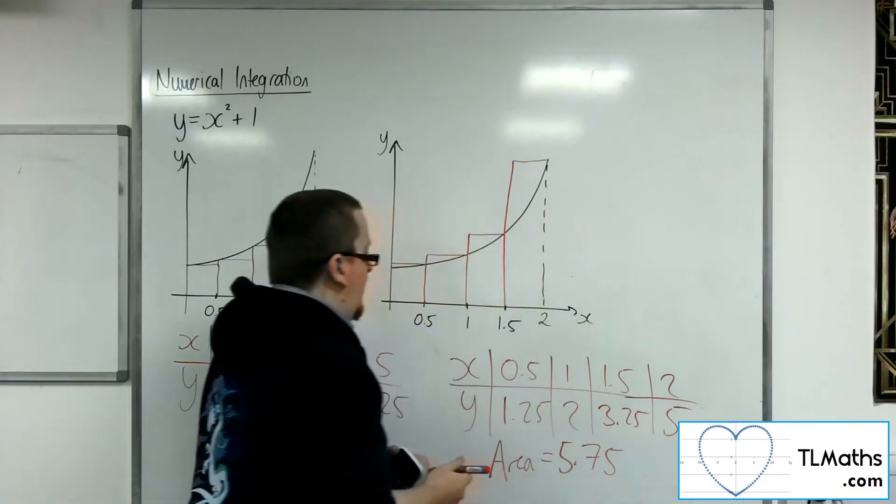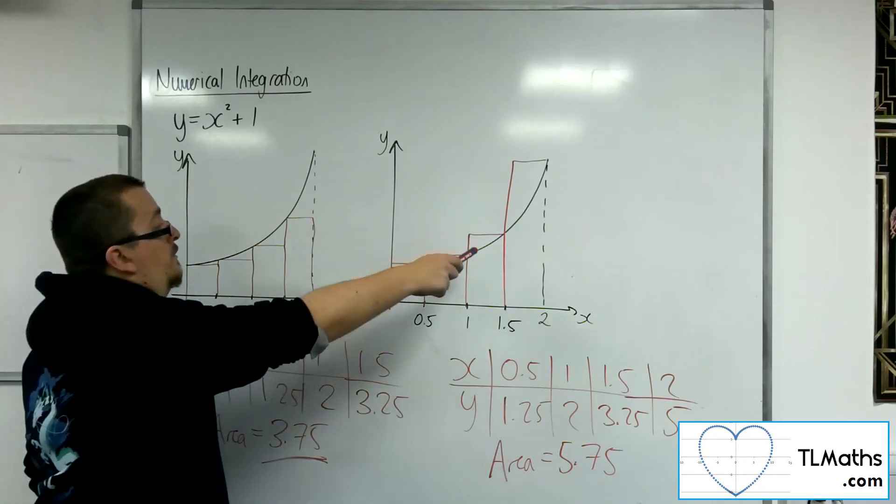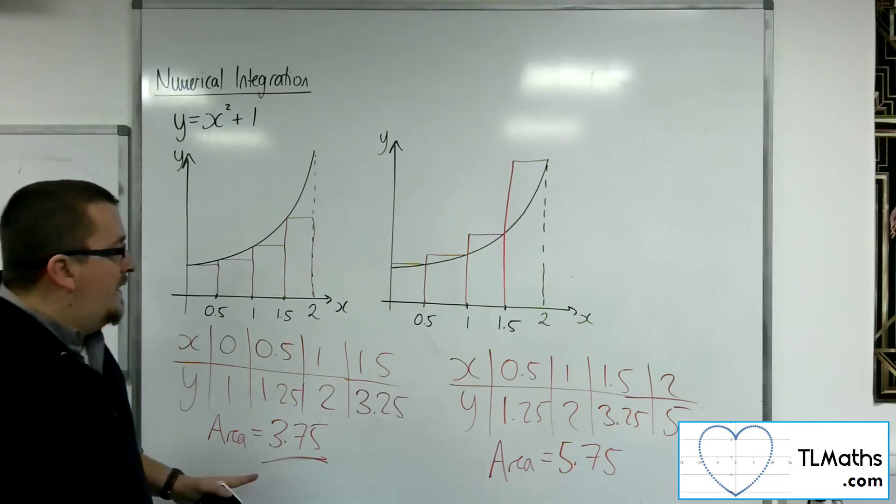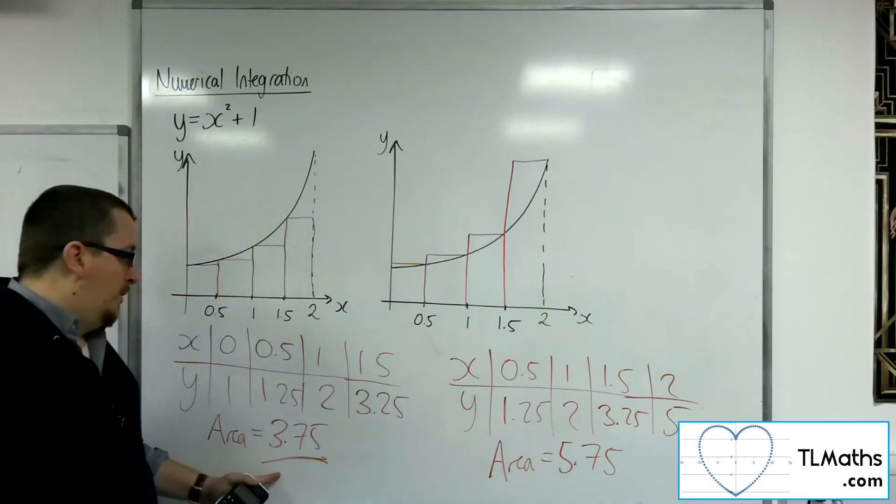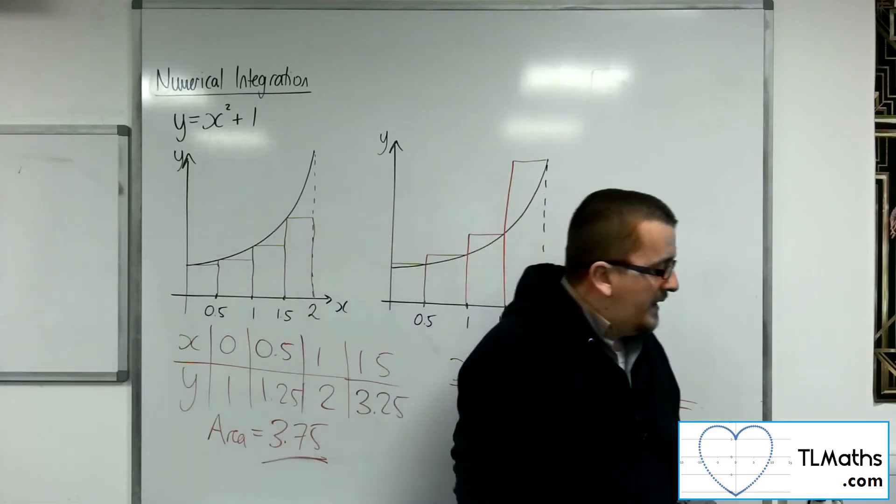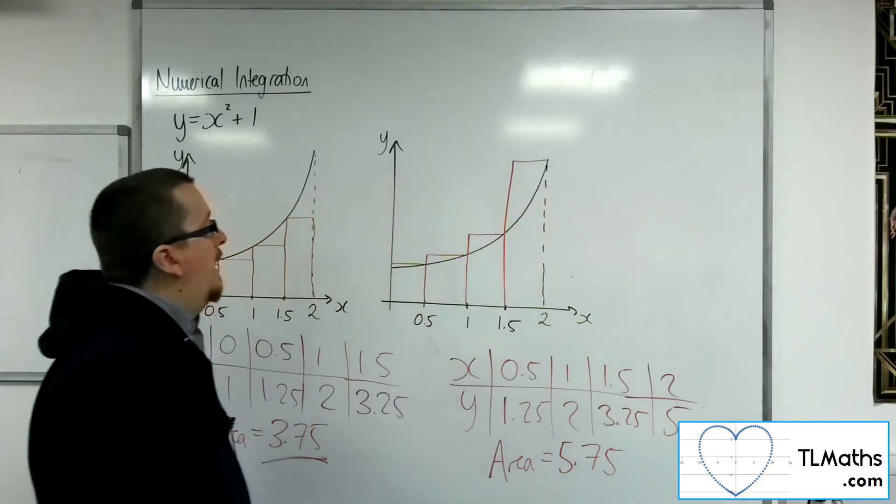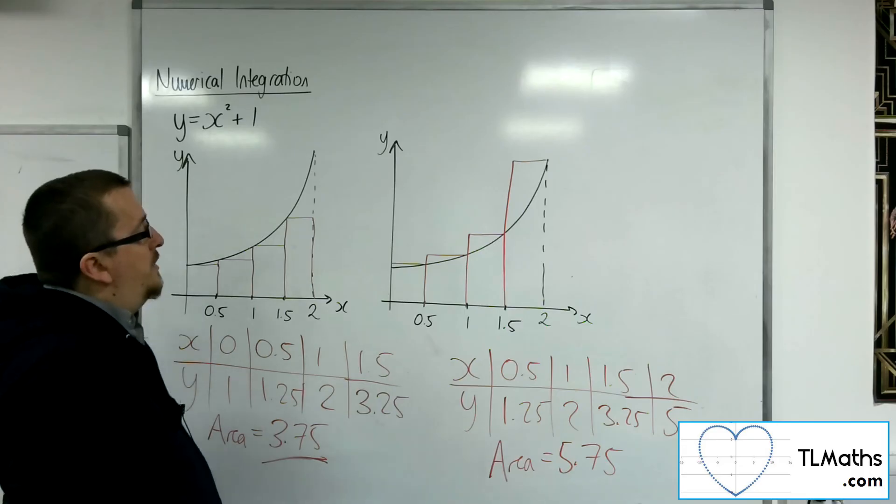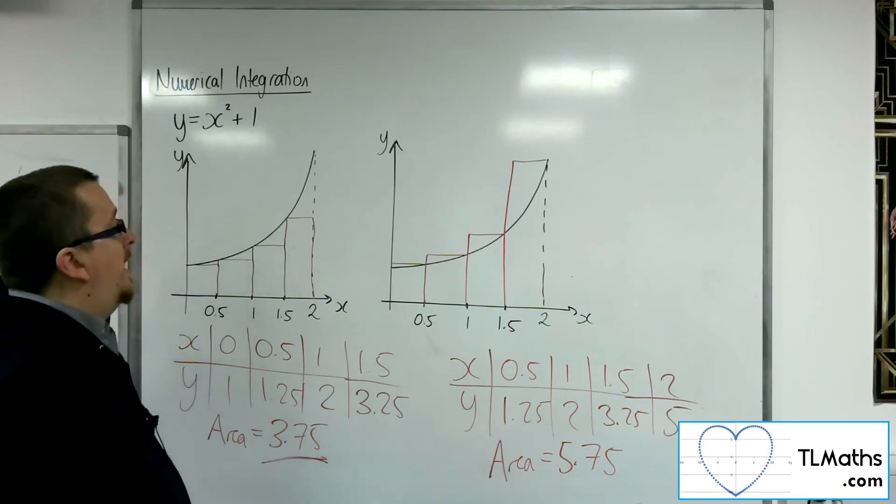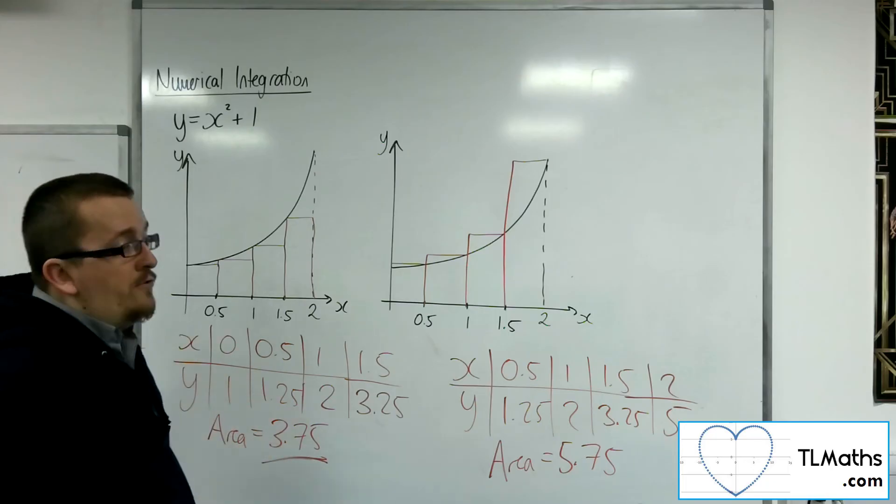Now, what I can see is that this is a definite overestimate. This is a definite underestimate. And so, I know that the exact area is somewhere between 3.75 and 5.75. And I know that if I was to instead have more strips, so more rectangles, I will get a better estimate.